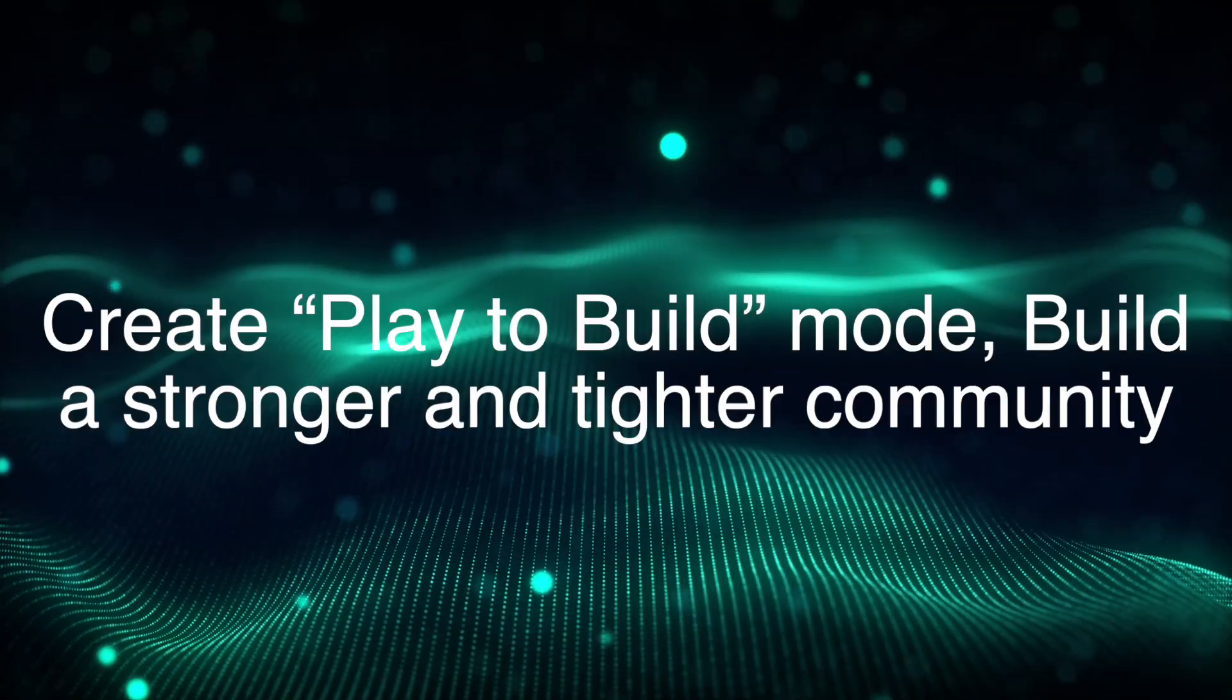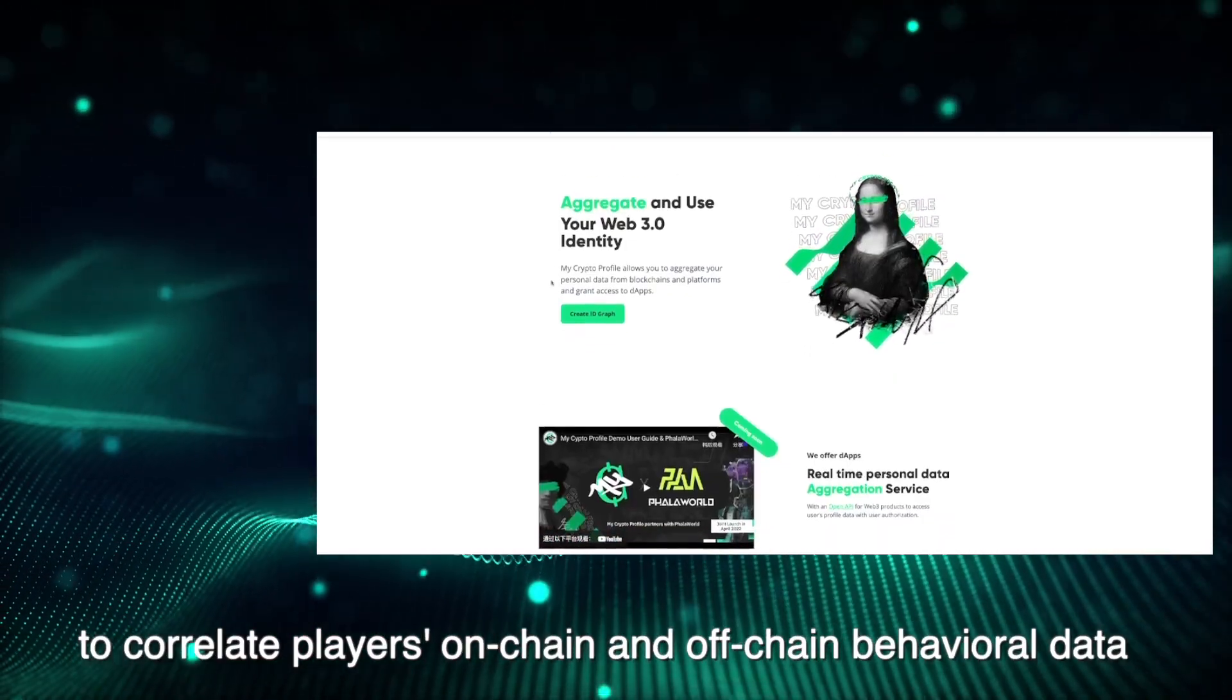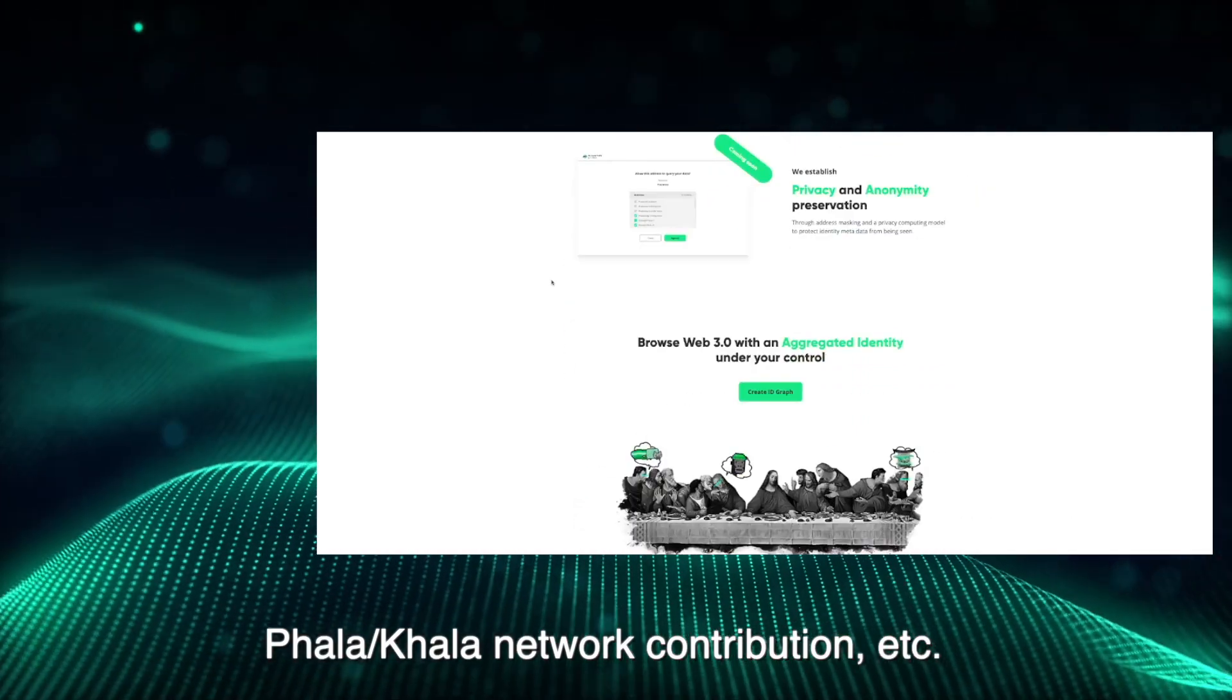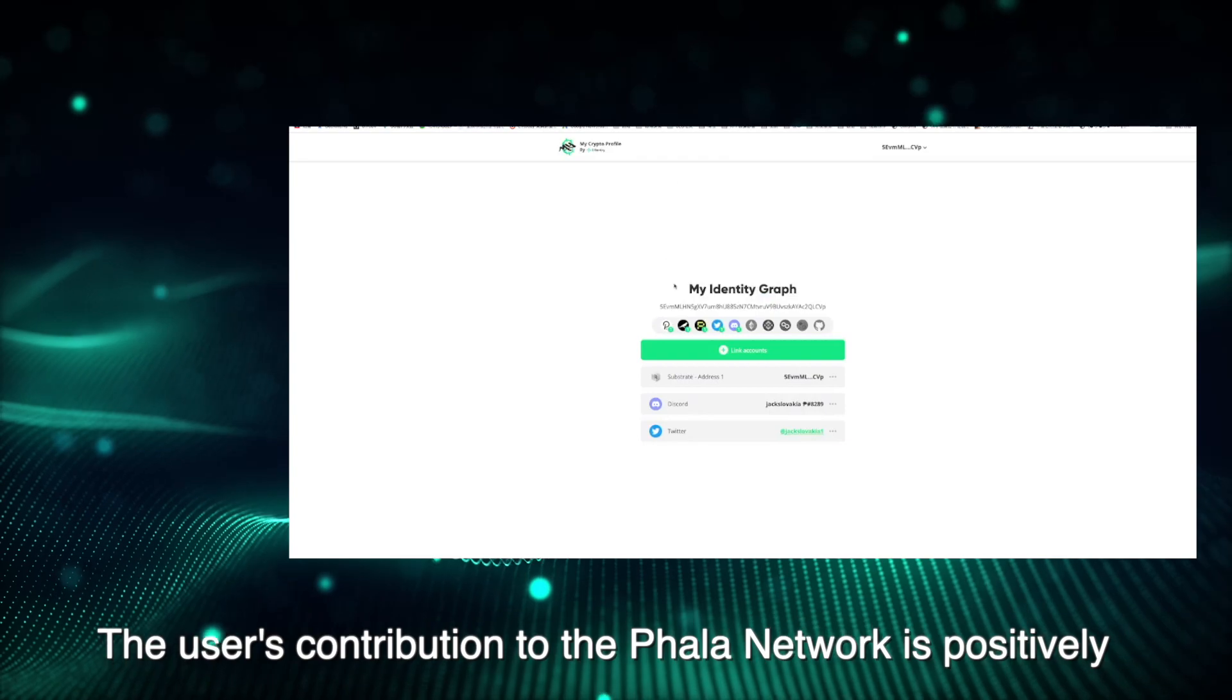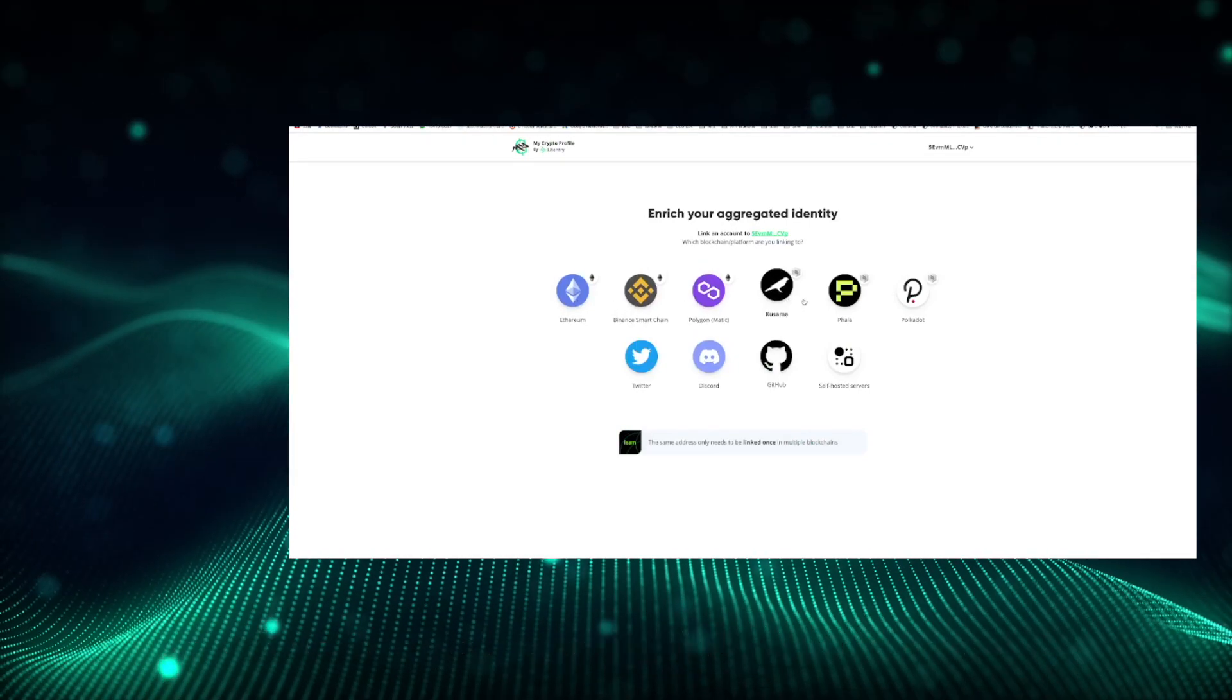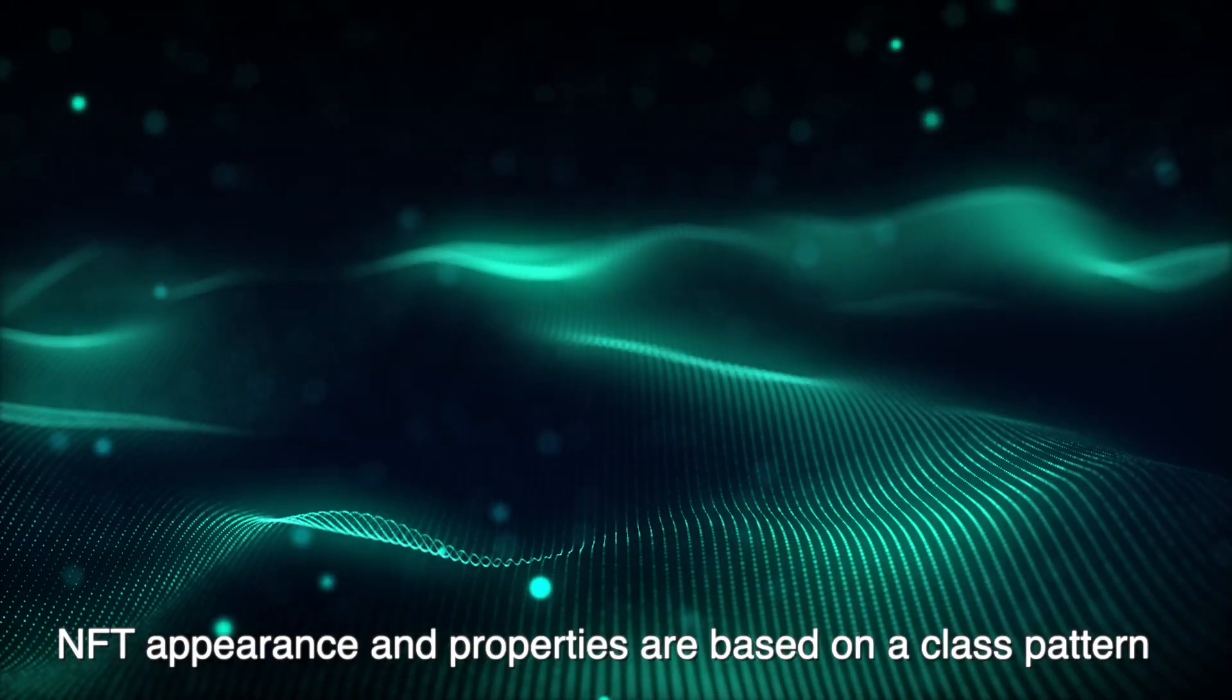Create Play to Build mode: build a stronger and tighter community using MCP's user identity system to correlate players' on-chain and off-chain behavioral data such as Twitter activity, MPW, Philot or Khala Network contribution. The user's contribution to the Philot Network is positively related to the Spirit value. That is, the continuous upward demand for NFT attributes can enhance the interaction of the Philot community, consolidate the community culture and enhance cohesion.